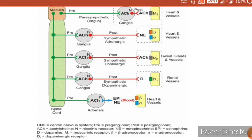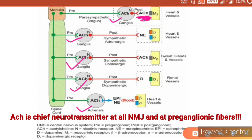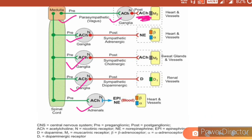This is the first difference between sympathetic and parasympathetic transmission — the relative lengths of post-ganglionic fibers and the position of ganglia. The second point: acetylcholine is the principal neurotransmitter at neuromuscular junctions as well as at all pre-ganglionic fibers, in both the parasympathetic and sympathetic nervous systems. In the parasympathetic system, the neurotransmitter released at the post-ganglionic site is also acetylcholine.